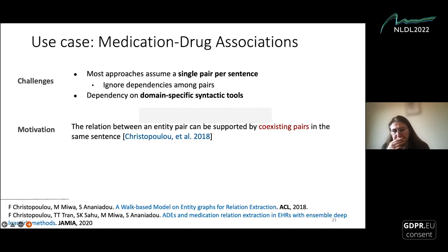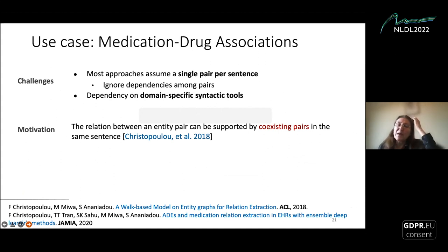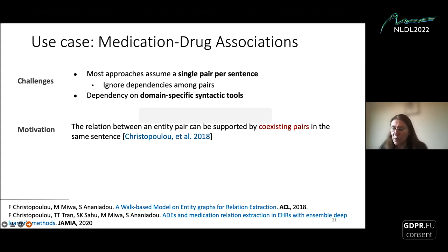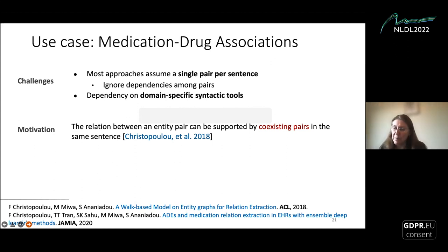The main challenge at the time in relation extraction was that most approaches assumed a single entity pair per sentence and did not take into account dependencies among different pairs. There was also lots of dependency on external syntactic tools, resulting in domain-specific models. Our motivation and hypothesis is that the relation between an entity pair can be supported by coexisting pairs in the same sentence. We aim to use additional pairs in the sentence to model a pair of interest — this is the work of my former PhD student Fenia Christopoulou.